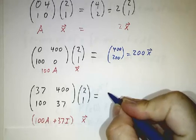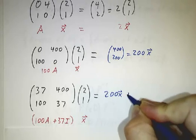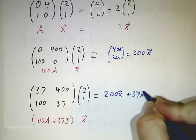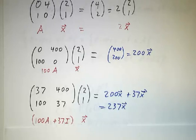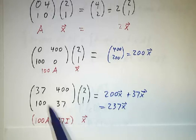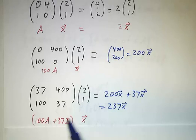So this is going to be 200x plus 37x and that's 237x. By adding 37 times the identity to the matrix, we didn't change the eigenvector any. We just added 37 to the eigenvalue.